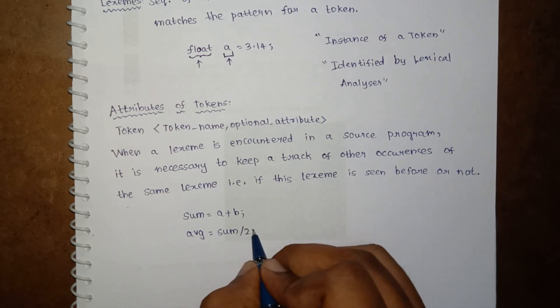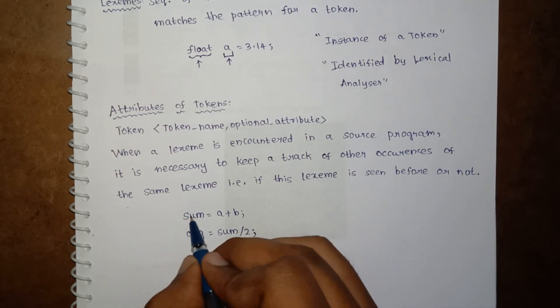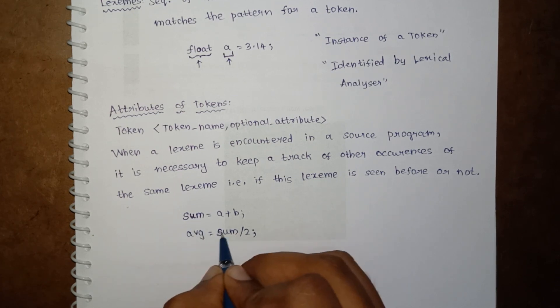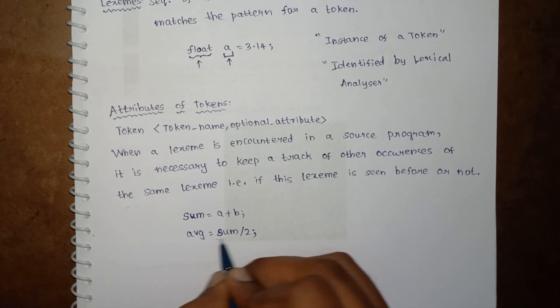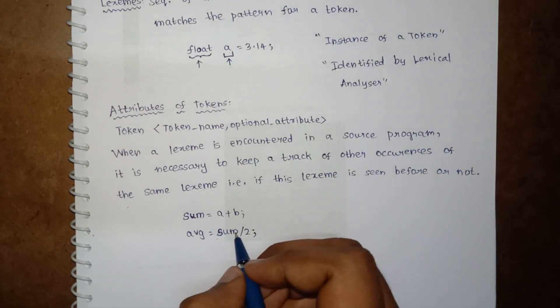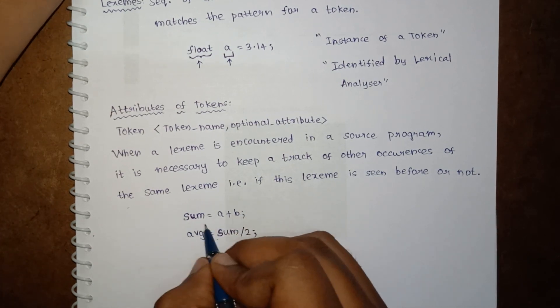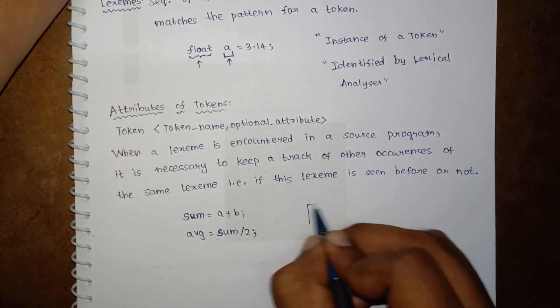In this example, first occurrence of this sum is in this first line, and the second occurrence is in the second line. Here we use the same sum here, right? So when we get to this sum, the lexeme should be in a symbol table already because it is an identifier and it should be in a symbol table stored previously.